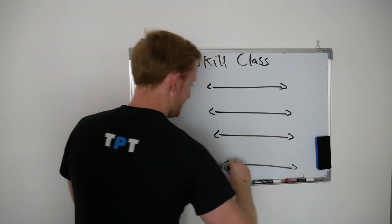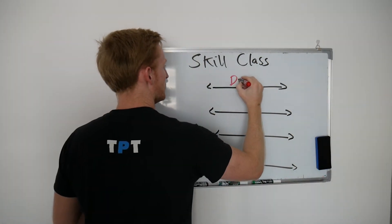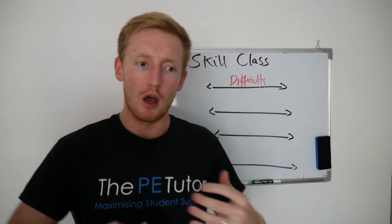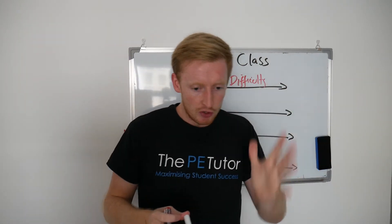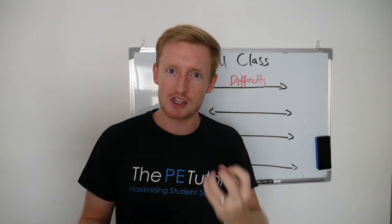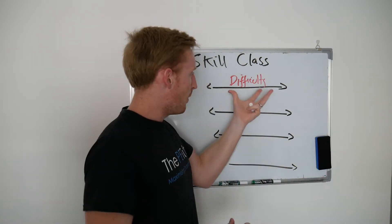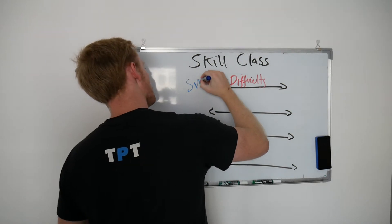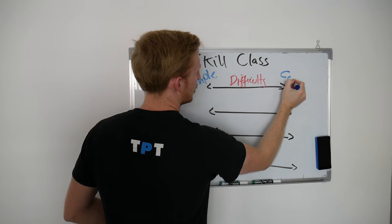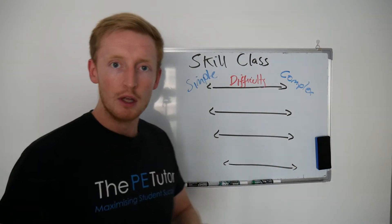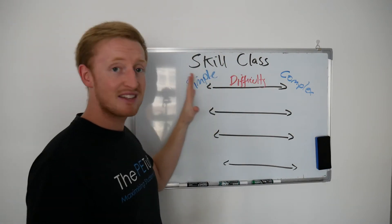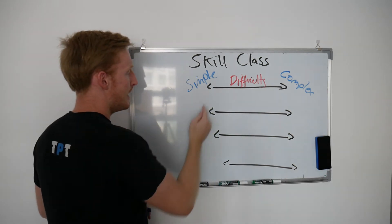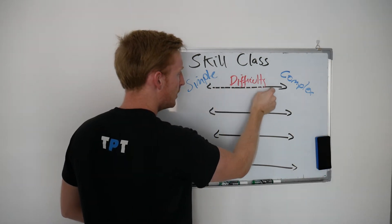Our first one is difficulty. Skill difficulty is defined by how much thought a person is required to put into it, how many different actions are sequenced one after the other, how imperative timing, accuracy, and precision are, and how much thought goes into executing that skill. That's what we mean by the measure of difficulty. We have two ends of the spectrum: the first being simple, and the second being complex. We can either call a skill absolutely simple or absolutely complex, but that's going to be very rare - most skills will sit somewhere along the continuum between the two.